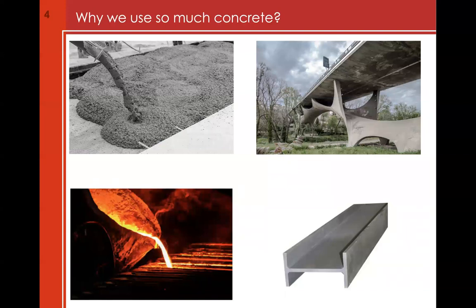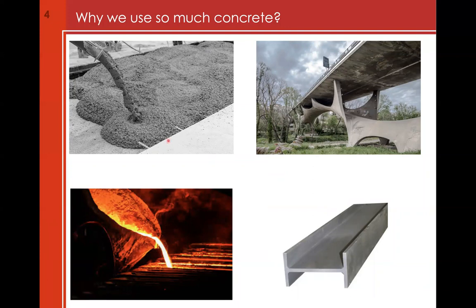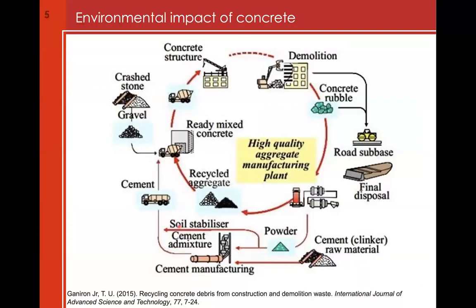Why is concrete so special? Because it can be first liquid, and after a while it becomes stronger. Since it's fluid at the beginning, we can give concrete whatever shape. An example is the Musmeci Bridge in Italy — a fantastic double-curved shell structure realized in reinforced concrete. The key advantage over materials like steel is that concrete can be liquid at normal temperature. However, concrete is the second most adopted material after water, and it has a very bad environmental impact.